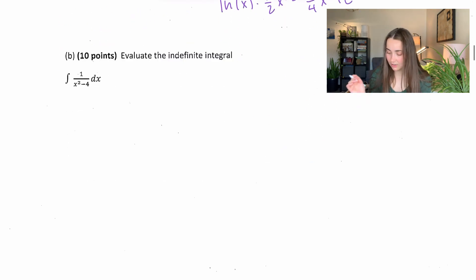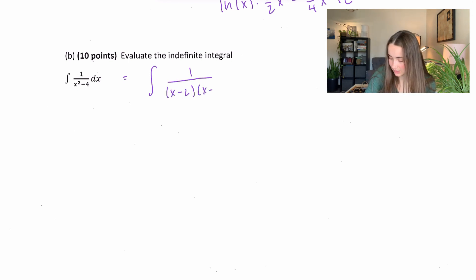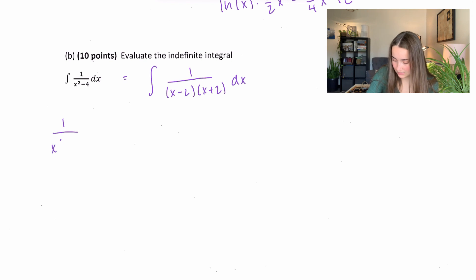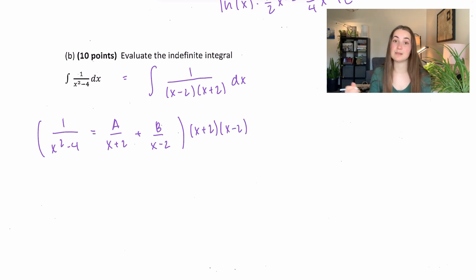Here we have another integral: 1 over x² minus 4. Notice we can rewrite the denominator as a difference of squares: (x minus 2)(x plus 2). That should cue you into partial fraction decomposition. So 1/(x²-4) equals A/(x+2) plus B/(x-2). We multiply through by (x+2)(x-2) to simplify.